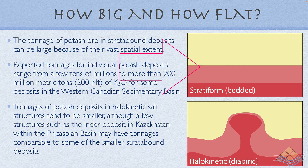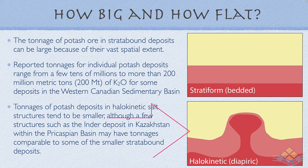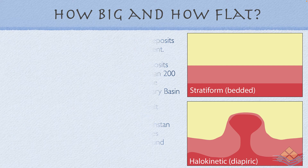In terms of size of the potash deposits, the flat-bedded strata-bound deposits, as exemplified by the Canadian Prairie Evaporite deposits, can be quite large. Individual potash deposits in stratiform bedded targeted units can have more than 200 million metric tons of K2O equivalent as a reserve. If we have flowing salt, halokinetic salt, or diapyric salt containing our targeted salt units, then because of the nature of that flow they tend to be smaller than the strata-bound deposits.